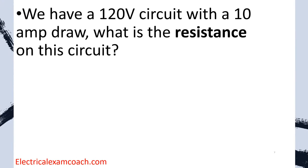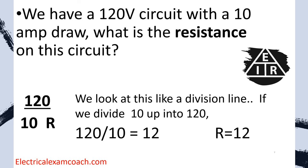Let's imagine we have a 120-volt circuit with a 10-amp draw. What is the resistance? We plug in what we know: 120 on top, 10 as the current, and divide. 120 divided by 10 gives us 12 ohms of resistance. We should be able to measure 10 amps with an amp clamp, 120 volts with a voltmeter, and 12 ohms of resistance. If we don't get those readings, there's something wrong — something failed, broken, disconnected, or causing extra resistance. It's really great for troubleshooting.